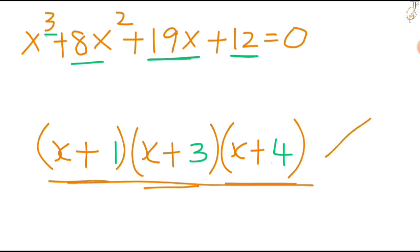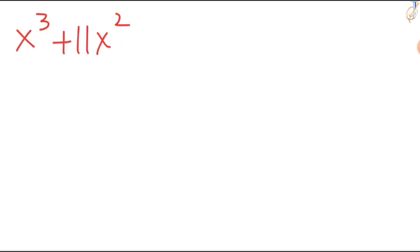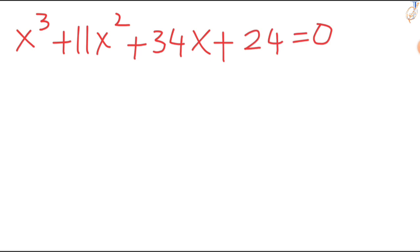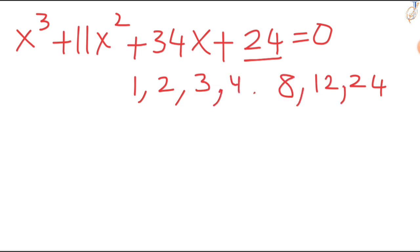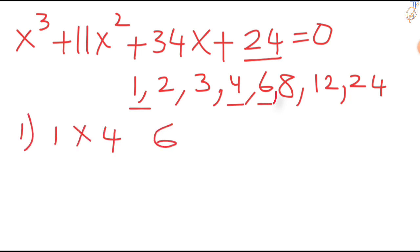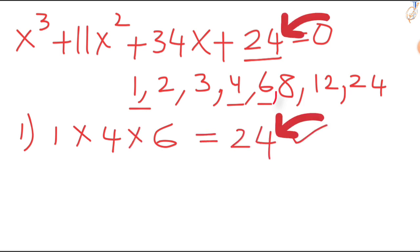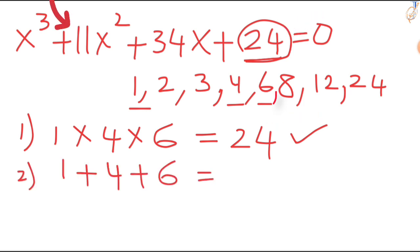Let's take another example to make this concept clear. x cubed plus 11x squared plus 34x plus 24 equal to 0. Write the factors of 24: 1 times 24, 2 times 12, 3 times 8, then 4 times 6. Among these factors, take any three numbers — select 1, 4, 6. Check the conditions: when you multiply these three, you should get your constant value. So condition 1 is satisfied. When you add these three, you should get the x squared coefficient. This condition is also satisfied.